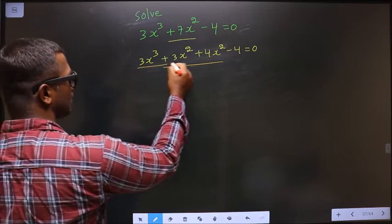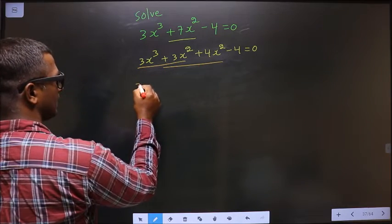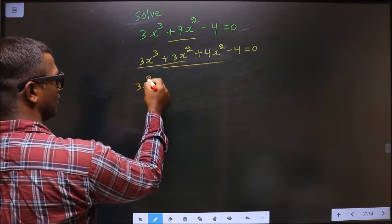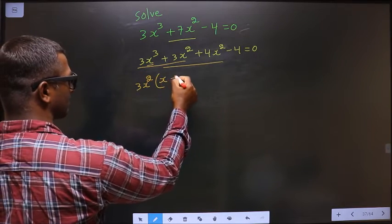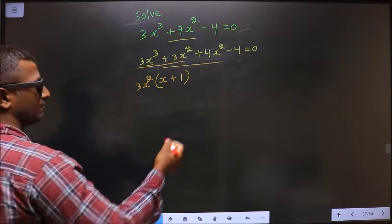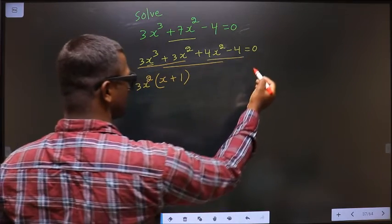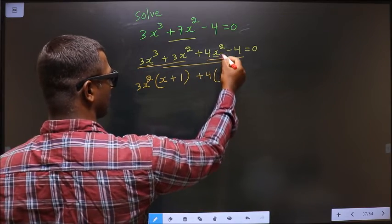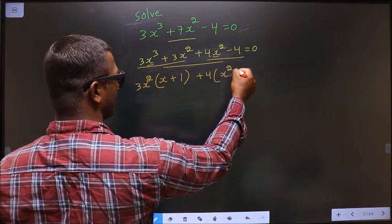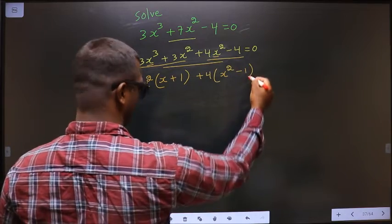From these two terms, what can you take out common is 3x² can be taken out common. So here left out with x and here I get 1. From these two terms, what can be taken out common is 4. So here I get x² and here I get 1.